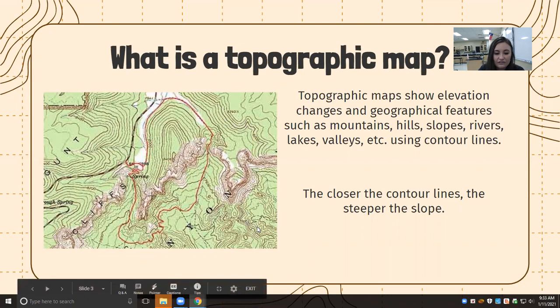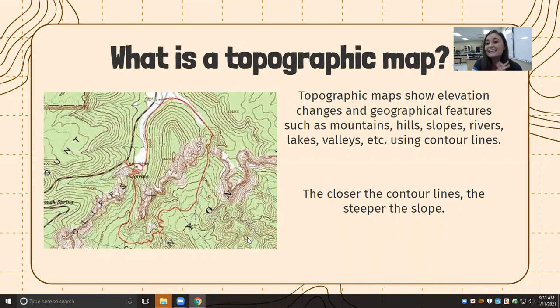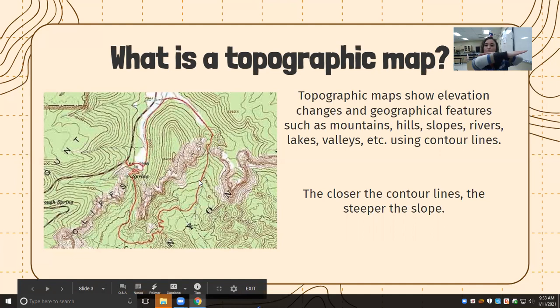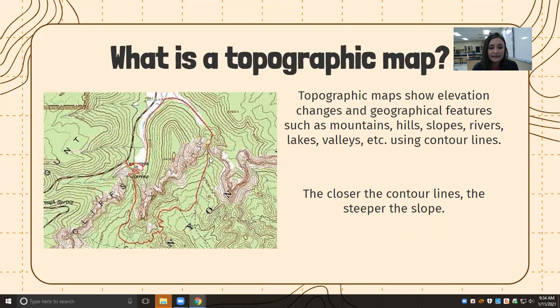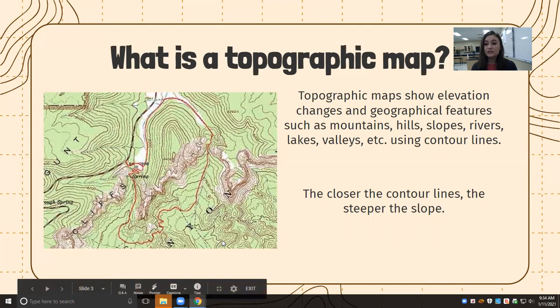The closer those contour lines are together — like right here — that tells me there's a larger elevation change in a shorter distance, so my slope is much steeper. If it is more gradual, like right here, that tells me the slope is more gradual and it's going to be much easier to hike that direction compared to the steeper section. That is due to the steepness of that slope.